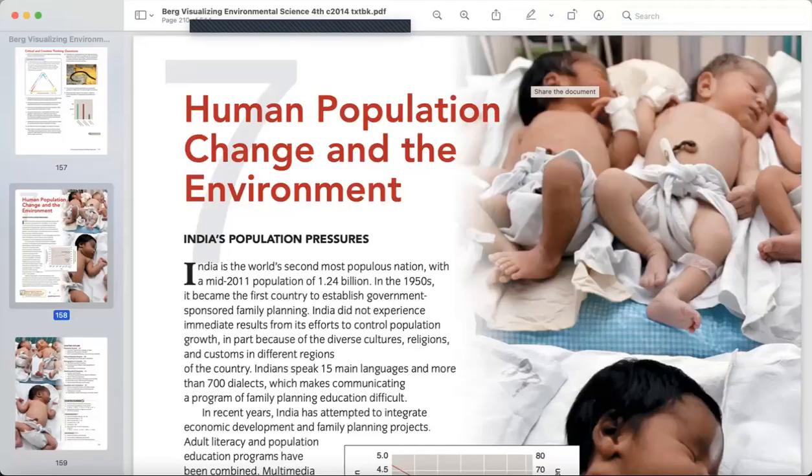So today we are going to discuss chapter seven, human population change and the environment for environmental sciences.